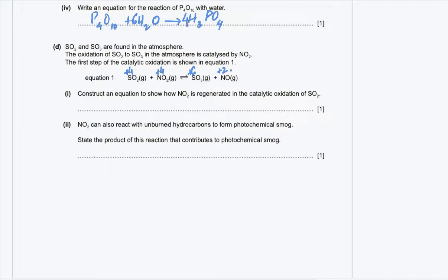Construct an equation to show how nitrogen dioxide is regenerated in the catalytic oxidation. Since NO₂ is used as a catalyst, it is always regenerated after the reaction. NO reacts with oxygen to reform NO₂ — this is the regeneration of the catalyst. Balancing requires half a mole of oxygen.